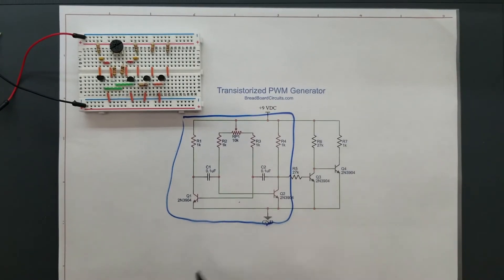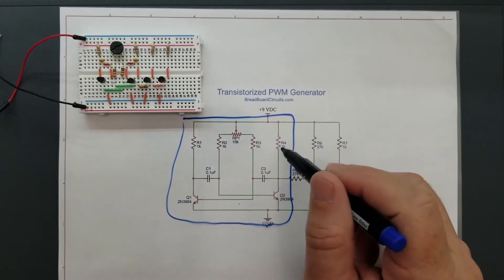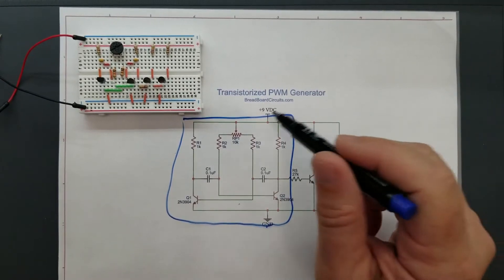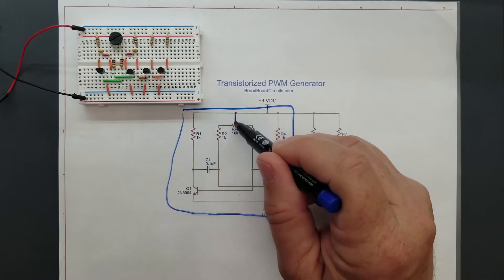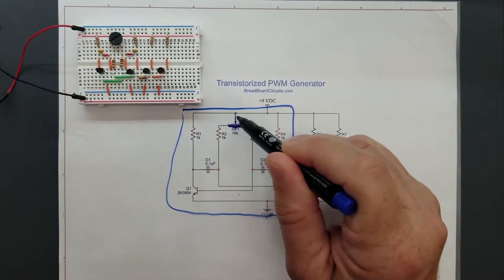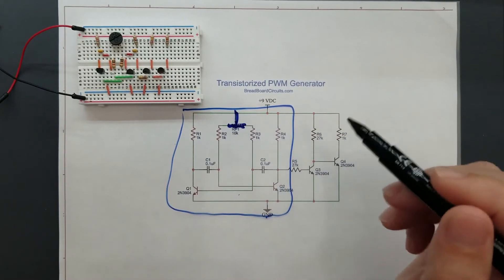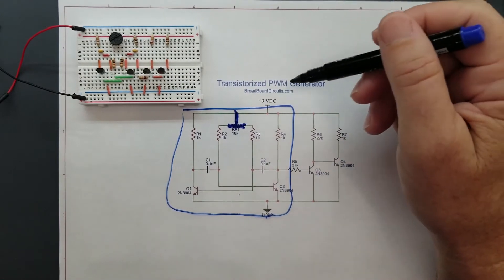It consists of two transistors and four resistors. Now, this pot right here was not here on the basic A-stable multivibrator. We introduced that for the PWM generator.